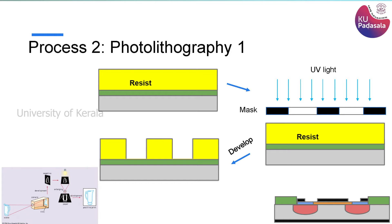Then I am using something called a mask. A mask has certain transparent areas and at the same time certain opaque areas. If you shine light through this mask onto your photoresist-coated wafer, through the transparent areas the light will fall on top of the photoresist. The opaque areas will not allow light to fall on the photoresist, so those areas will have no chemical reactions. The areas where light fell will dissociate, while the areas where light did not fall will stay intact.